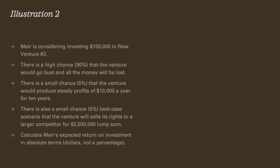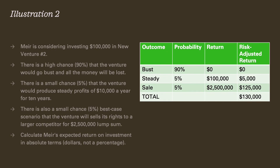What does his ROI look like here? Let's run the numbers again. Three scenarios: bust, steady, and sale. We plug in the probabilities. Although there's a huge chance of getting nothing, that 5% opportunity to earn $2.5 million is actually really powerful — it drives the math significantly. 5% of $2.5 million is $125,000. Adding up all three scenarios, the risk-adjusted return total is actually $130,000.